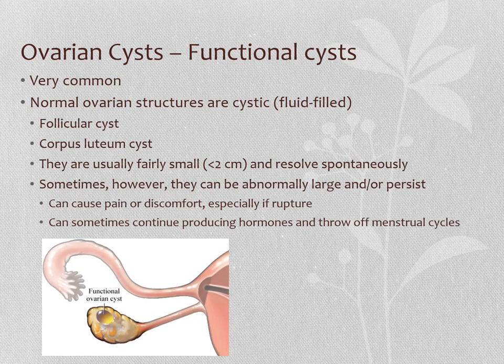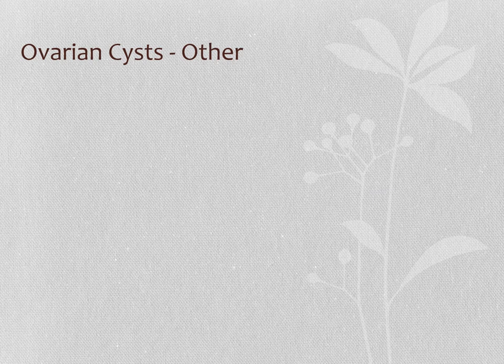So this is all of that information on a slide. As I said, they're usually small and usually go away on their own, but if they're abnormally large or they persist, sometimes they can cause problems. Sometimes we'll need to treat them, often with hormonal medications — birth control can be very effective. Now let's talk about the other things that can form a fluid-filled structure on the ovary. These are less common — the abnormal types of things that can cause a cyst.